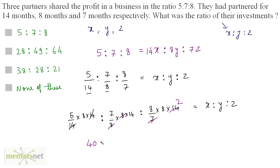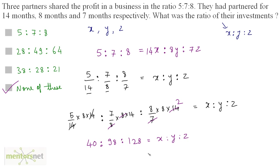So we have 5 is to 7 times 14 which equals 98, is to 8 times 8 which is 64, times 2 which equals 128, equal to x is to y is to z. Even if we divide this complete ratio by 2, we will get 20 is to something — and that is not in our options. So the correct answer to this question is none of these. But we did find out the ratio of their investments.